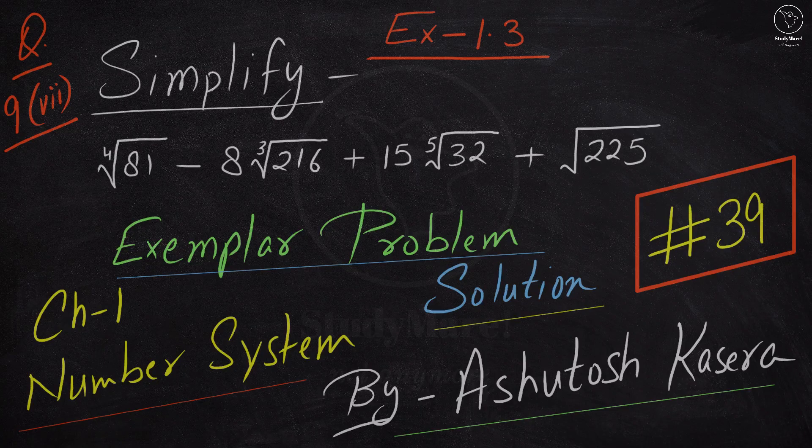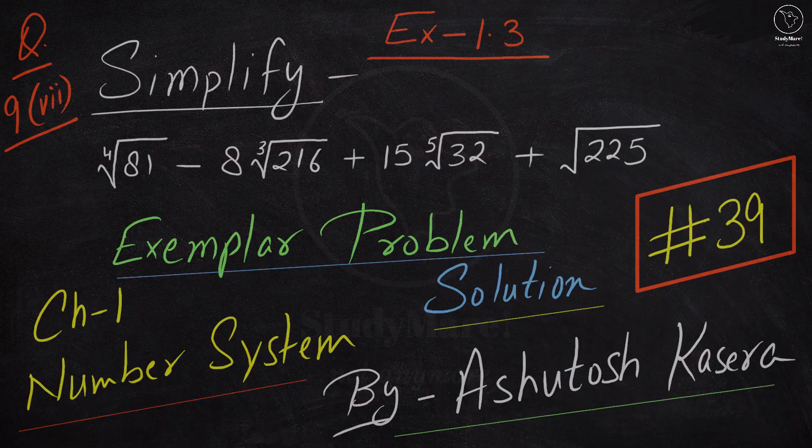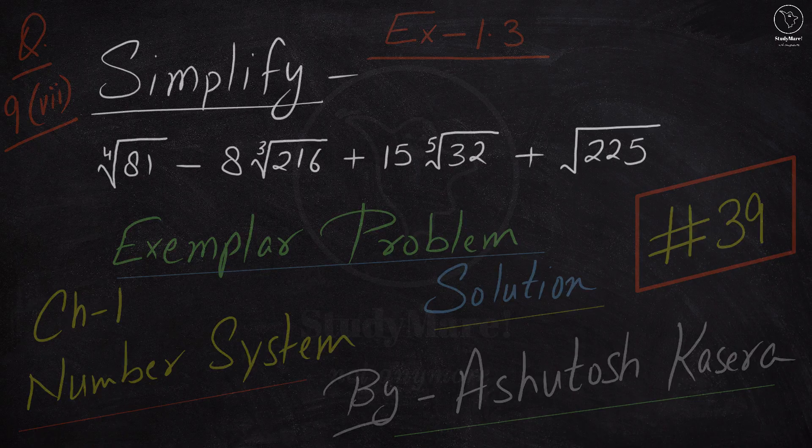Simplify: 4th root of 81 minus 8 into 3rd root of 216 plus 15 into 5th root of 32 plus root of 225.